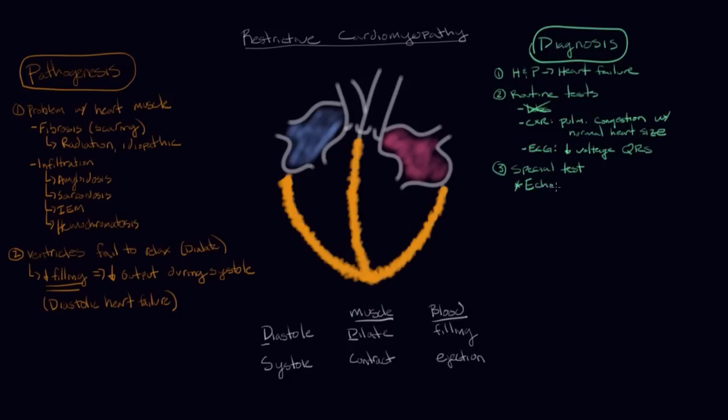And the most important of these is the echocardiogram, which is an ultrasound of the heart. And in an echocardiogram what you're going to see is increased ventricular thickness, which you can kind of appreciate here in this diagram of restrictive cardiomyopathy.